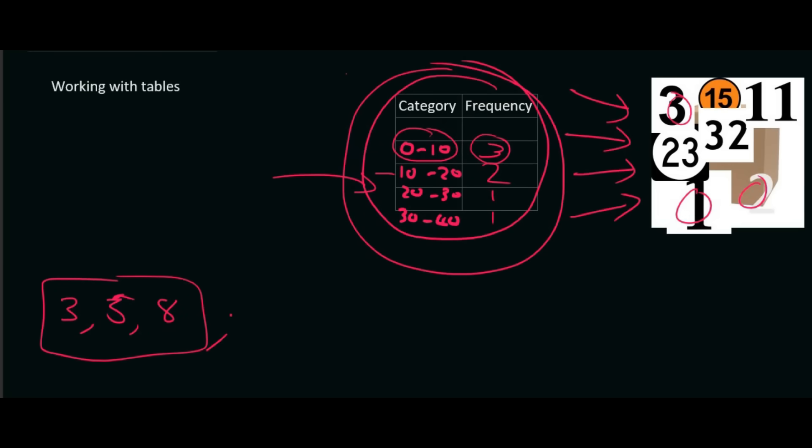Of course we knew what the numbers were. It was the numbers 1, 2, and 3. But you won't know that in the test. Then in the second category, the numbers 10 to 20, there's two of them. So I'm just going to say 15 and 15. I don't know what they are. Of course we knew that they were the numbers 11 and 15. And then the number 20 to 30, there was only one. So I'm just going to guess that it was 24. But hey, it was actually 23. And then 30 to 40 was 32.